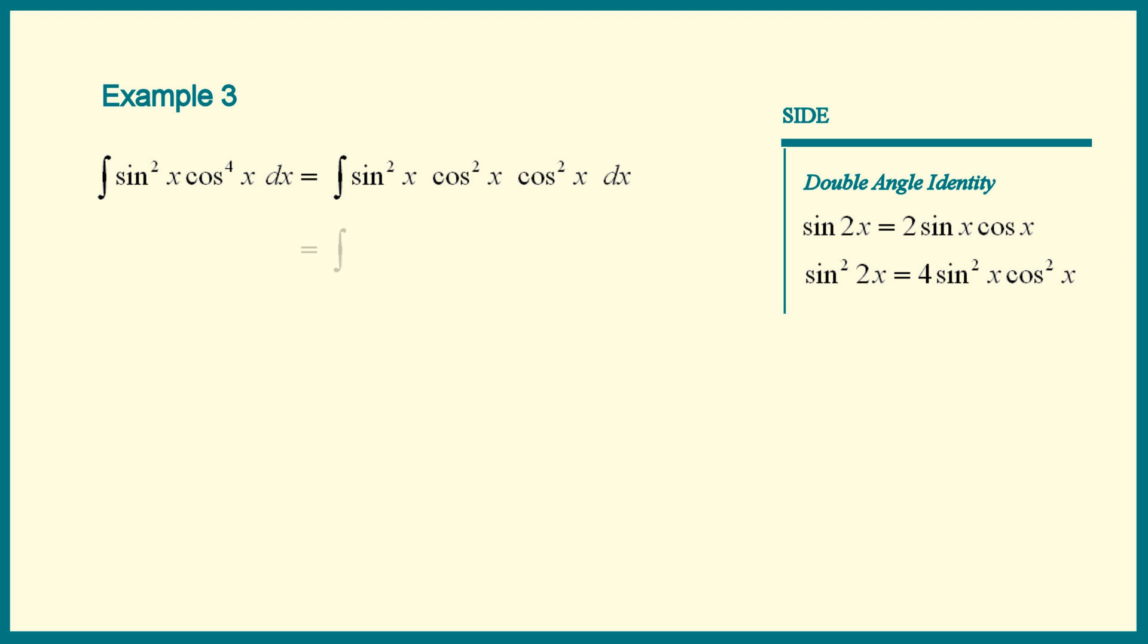So let's put that inside the integral. Now we are ready to apply the half-angle formula for whatever is left over. Here we have cosine squared x, that's 1 plus cosine of 2x over 2.